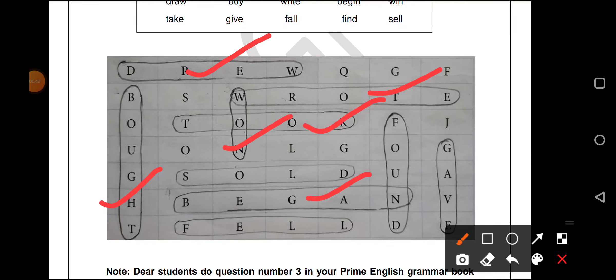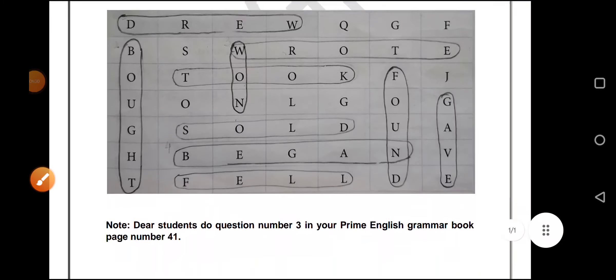Take will be took, give will be gave, fall, fell, find, found. And sell, sold. So these are the irregular verbs for each.